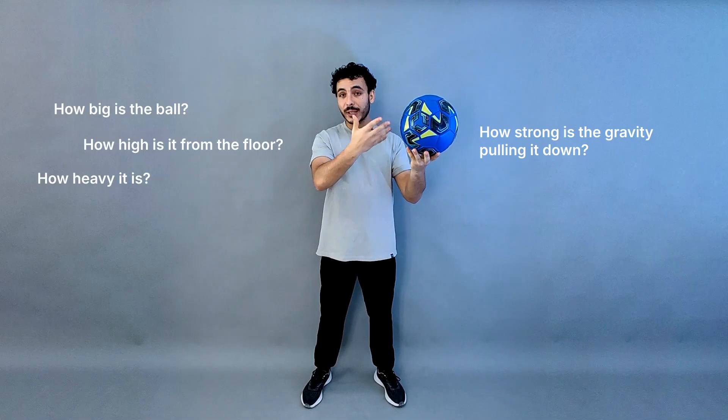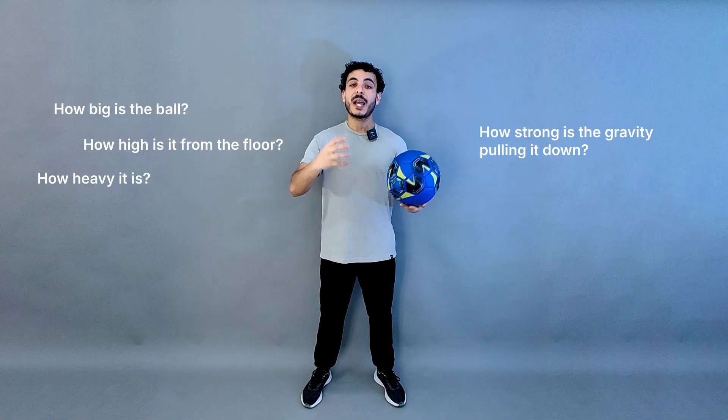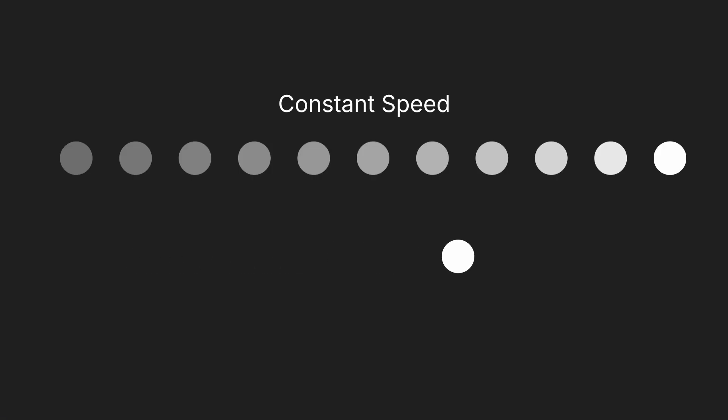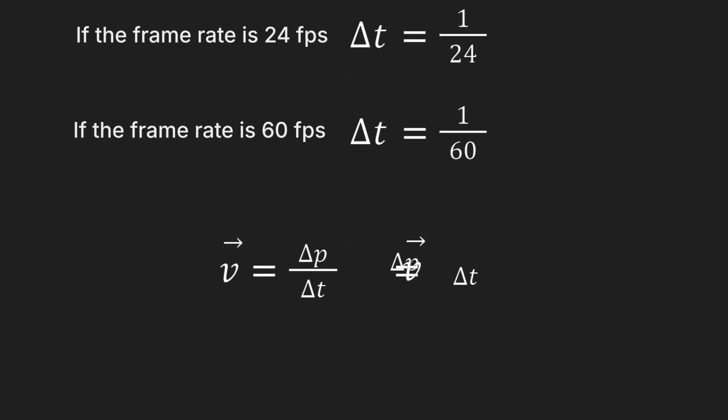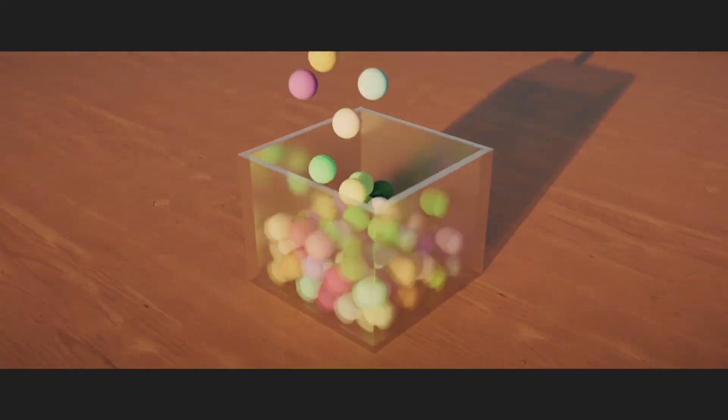Throughout this course, you won't just learn how to create a physics simulation in Blender. You will literally build your own physics engines inside of geometry nodes. You will learn about the real-life forces that make our world function the way it is — velocity, acceleration, collision, gravity — and how all of these forces interact with each other and more. And you will learn all of that by creating this falling balls simulation.